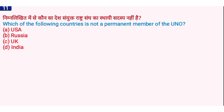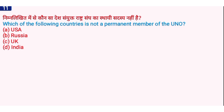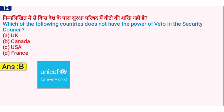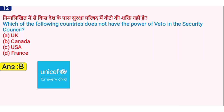Which country is not a permanent member of the United Nations Organization? The right answer is option D, India. USA, Russia, and UK are permanent members of UNO, but India is not. Next question: which country does not have the power of veto in the Security Council? The right answer is option B, Canada. Canada does not have veto power in the Security Council — you have to remember this.